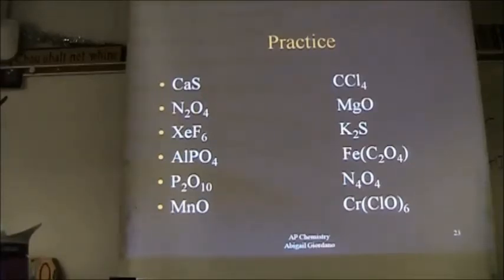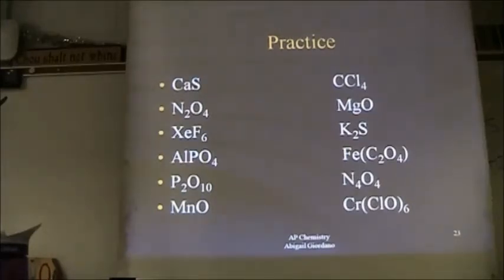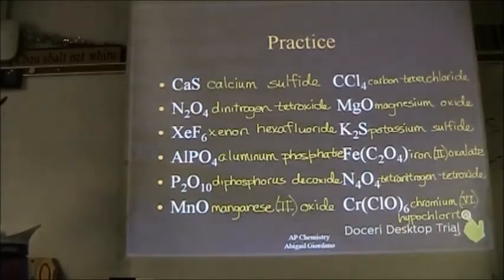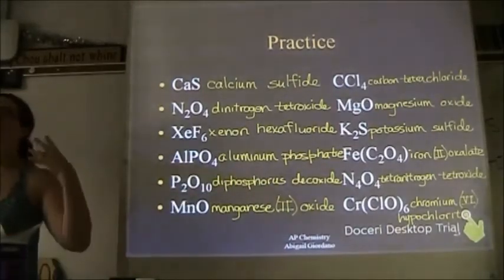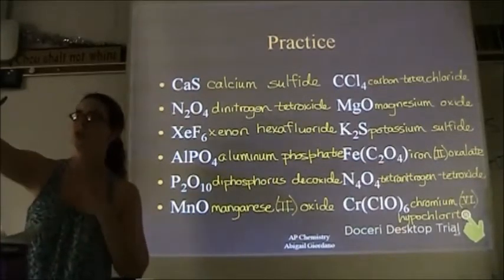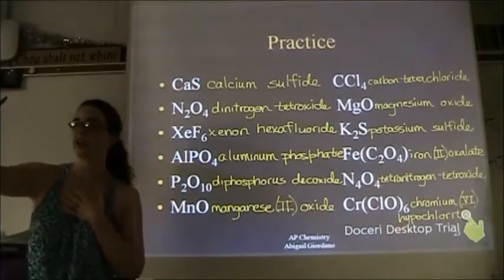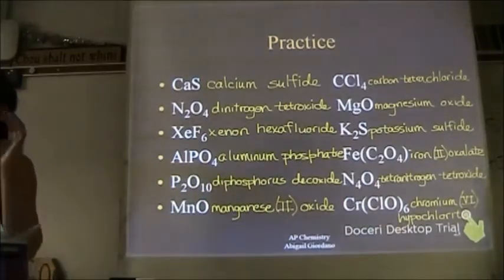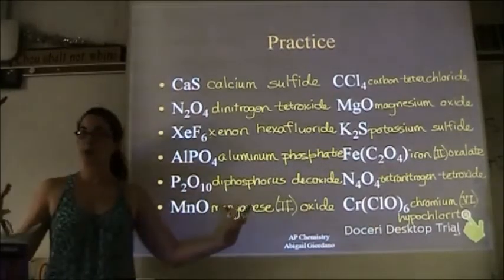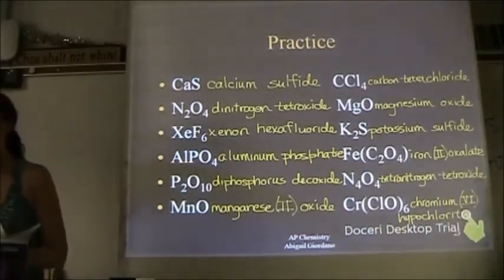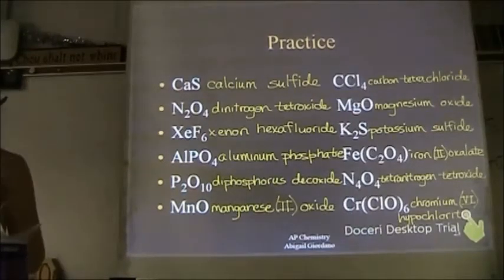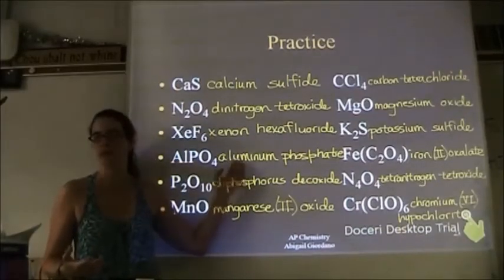If you finish this, feel free to go on to the next slide. For the ionic ones you come across, make sure you ask yourself: does this metal need a Roman numeral or not? Because some do and some don't. The ones that need a Roman numeral are mostly your transition metals and some metals underneath the staircase. Aluminum is technically under the staircase, but it can only carry a charge of plus three.